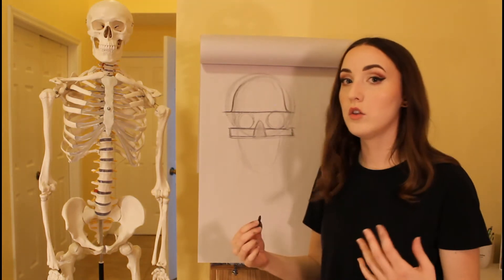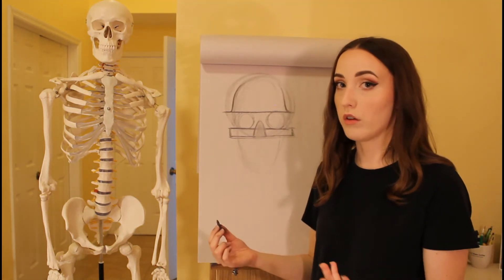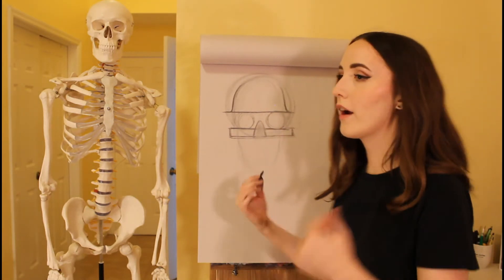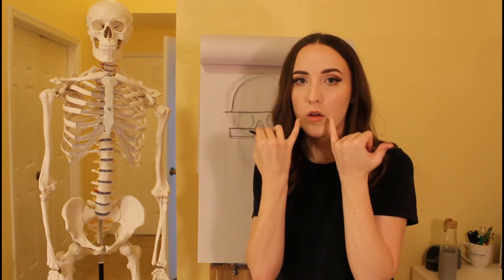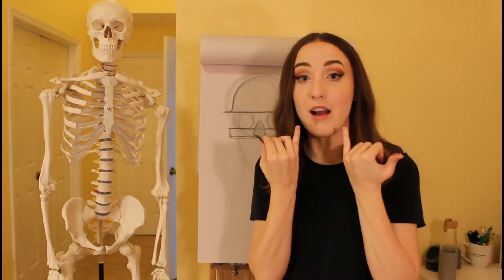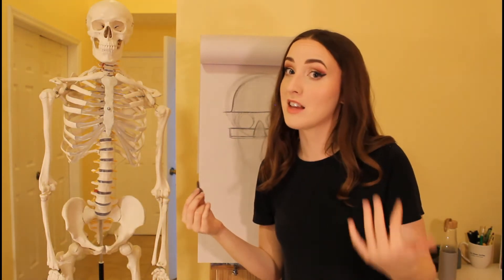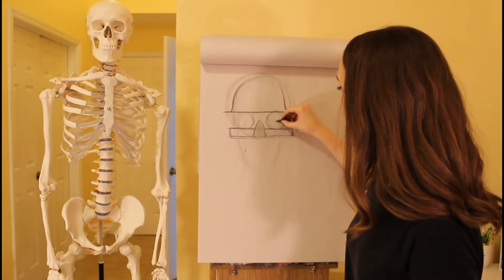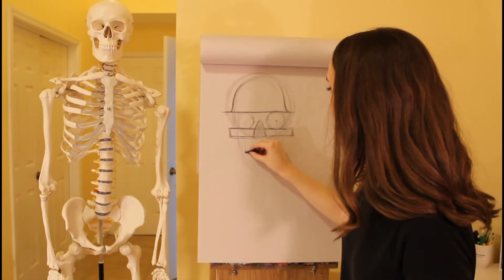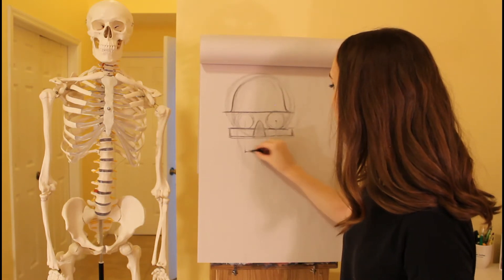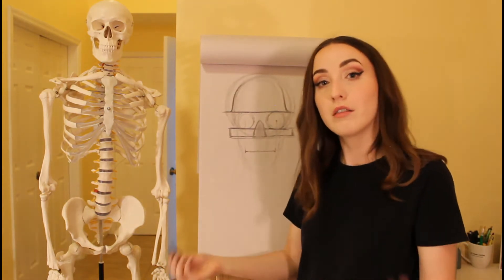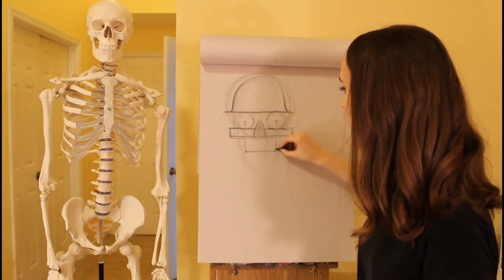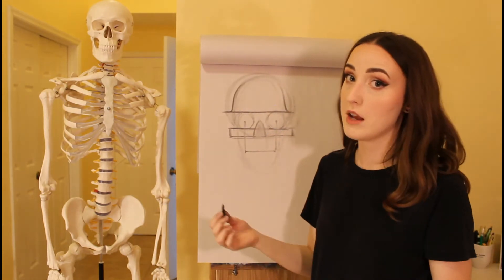When you are drawing someone, question where the corners of their mouth line up with their eyes. Typically, the center of the eye would line up with the corners of the mouth — it doesn't mean it's that way for everybody, but ask that question when you're drawing someone. It might be typical or it might be atypical.